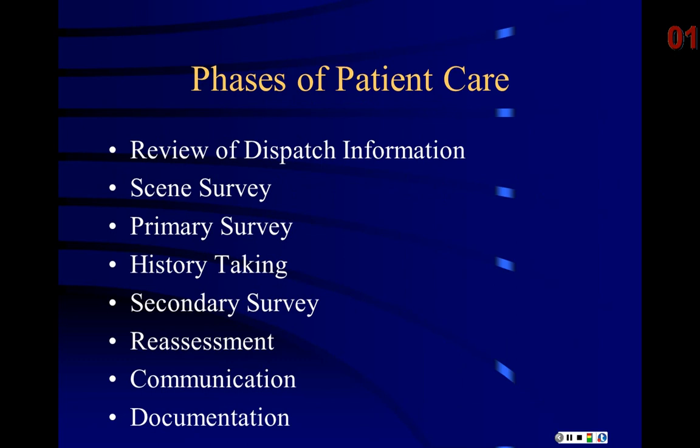There are some phases of patient care we're going to talk about: review of dispatch information — this happens all the time, ongoing, because you may get updated dispatch information — scene survey, primary survey, history taking, secondary survey, reassessment, communication, and documentation. These are all phases of patient care. If you have a test or quiz question on phases of patient care, this is what they're talking about.